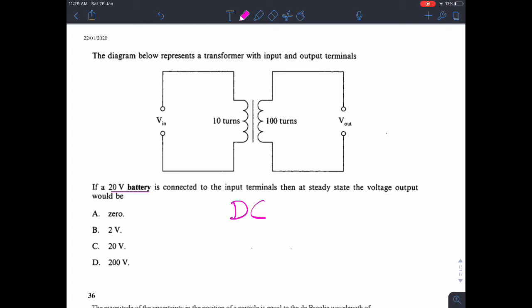That potential difference at the beginning in that first coil is not changing. Remember in order to induce an EMF, you need a change in flux linkage over time. And in this case, there is no change in flux linkage because this coil is experiencing a constant voltage. So there is no change in flux linkage in the second coil. And so therefore, the EMF induced is going to be zero because it's a battery. If this was an AC input, then it would be different, but it's not. It's a battery. So the answer is zero.